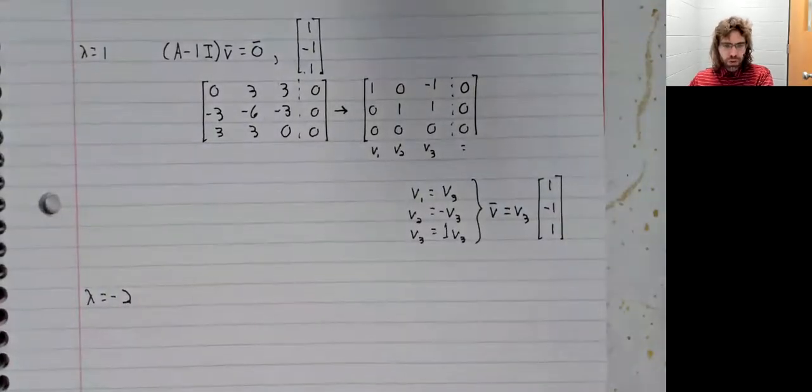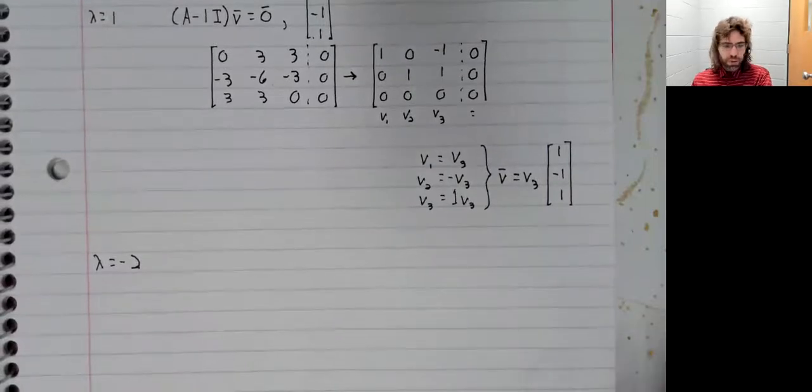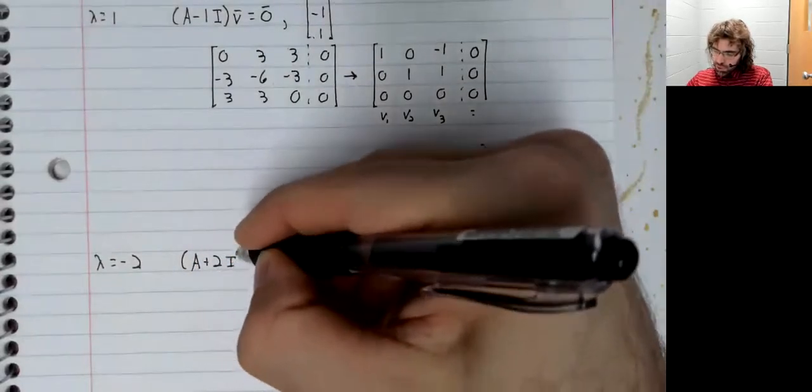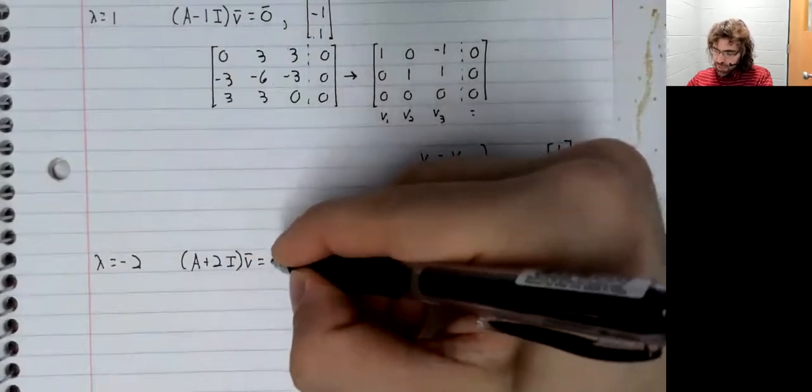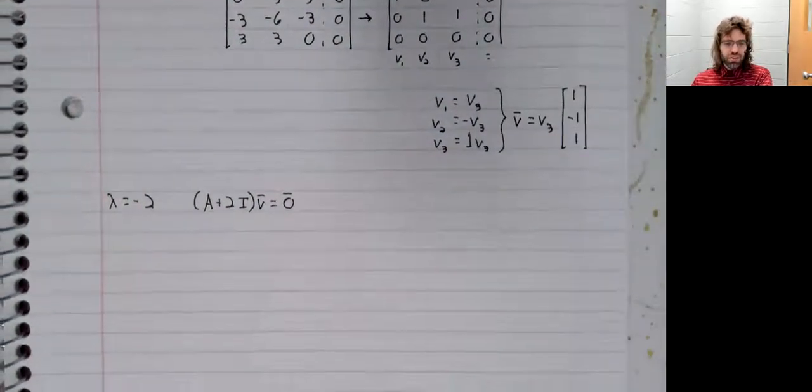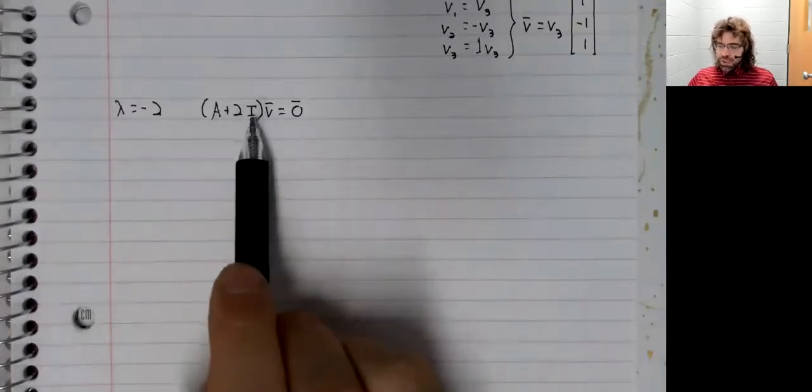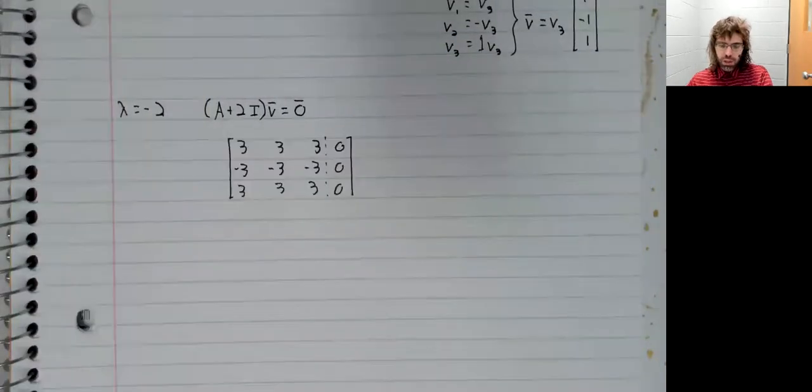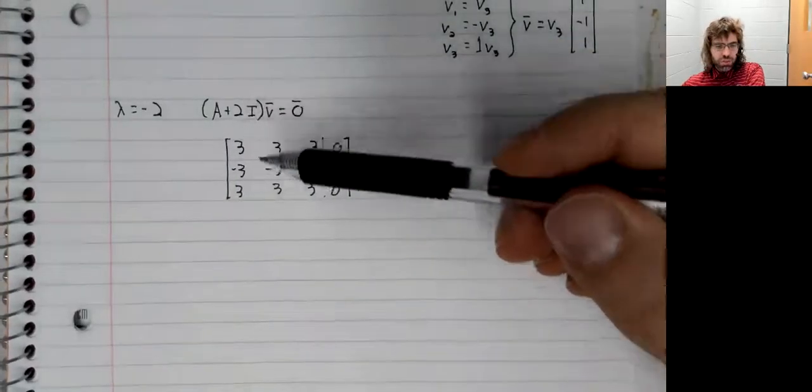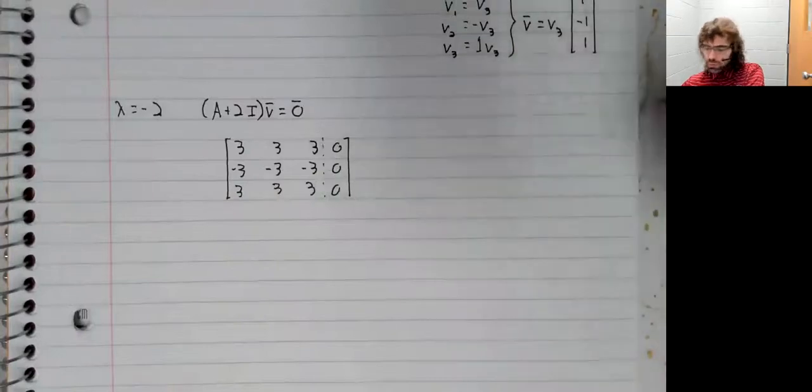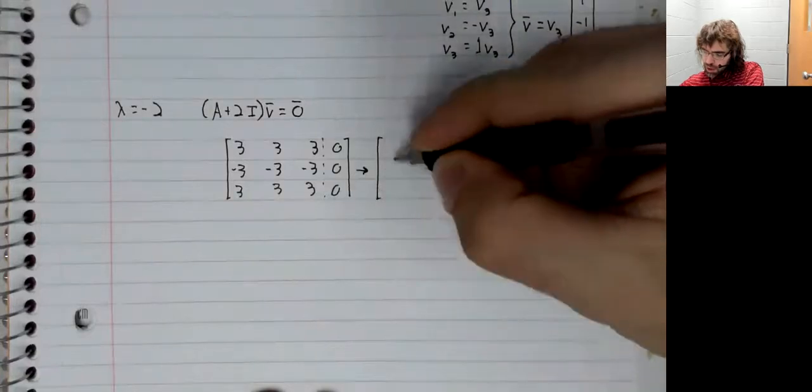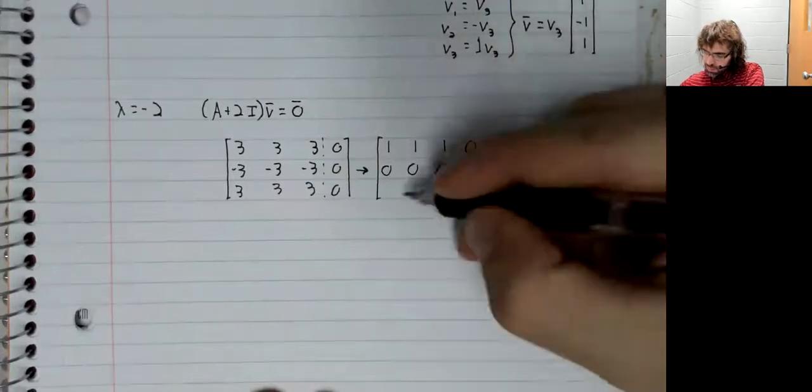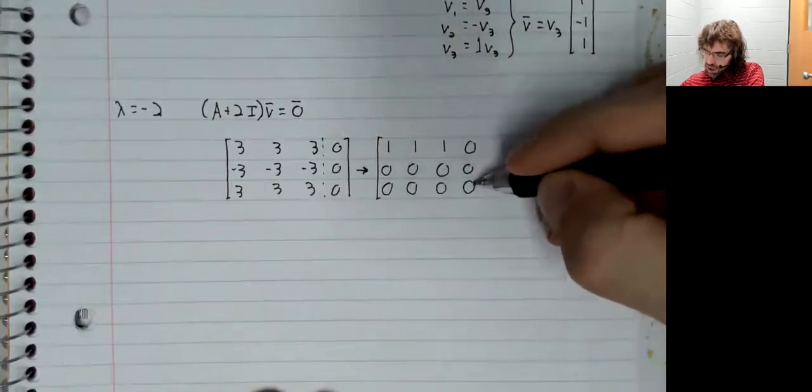So let's move on to the second eigenvalue, which was negative two. And look at A plus two I times V equals zero. We solve this once again using Gauss-Jordan elimination on the augmented matrix, A plus two I augmented with zero. And the Gauss-Jordan elimination gives us this.